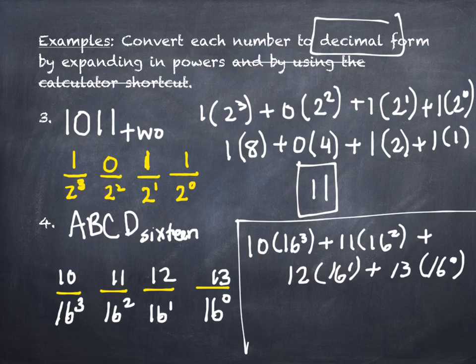You need to show some work in between — I don't want to just see you start with ABCD base 16 and get an answer. That doesn't show me you understand how the power expansion works. Please show at least the expansion step. Someone with a calculator: multiply out 10 times 16 cubed, plus 11 times 16 squared, plus 12 times 16, plus 13 times 1, and add them together.